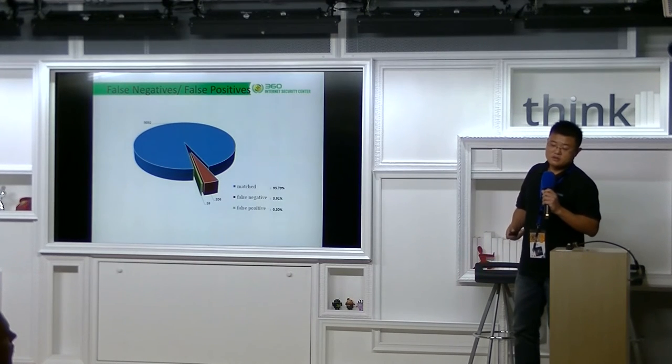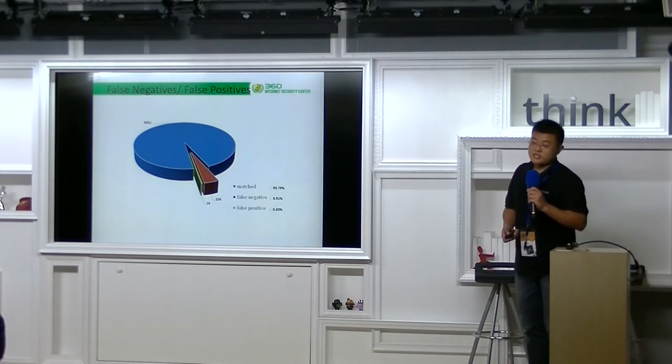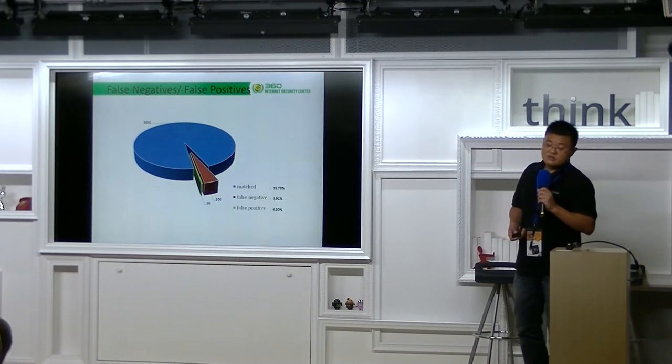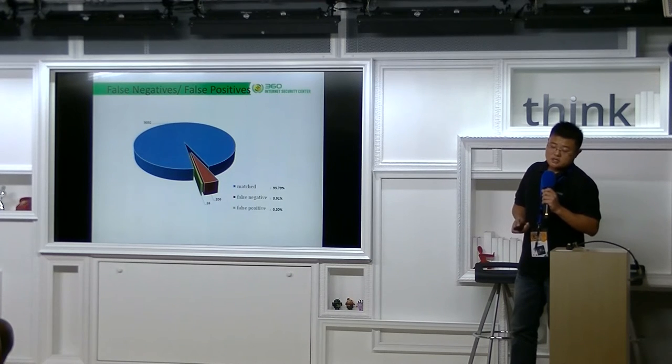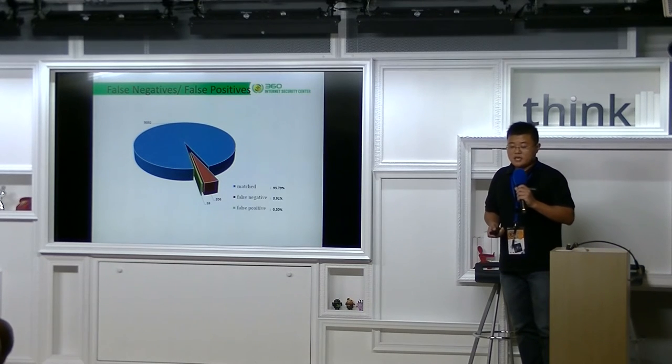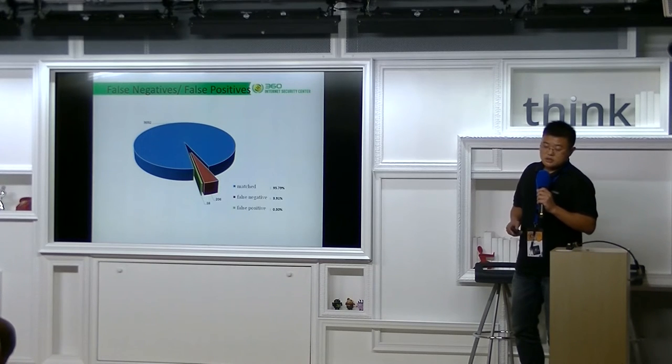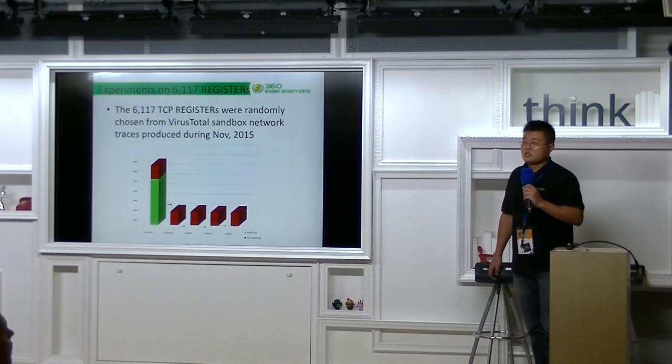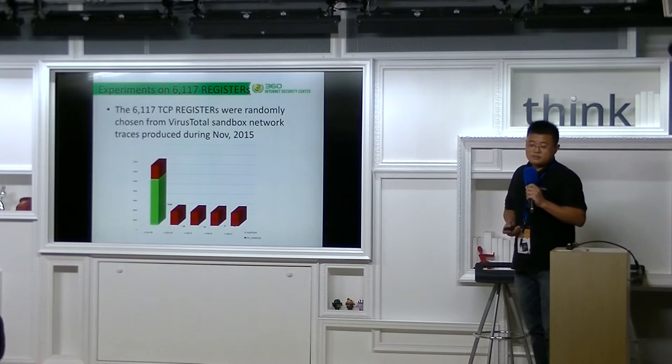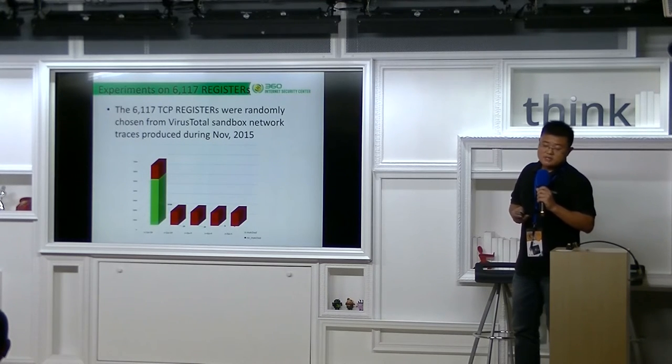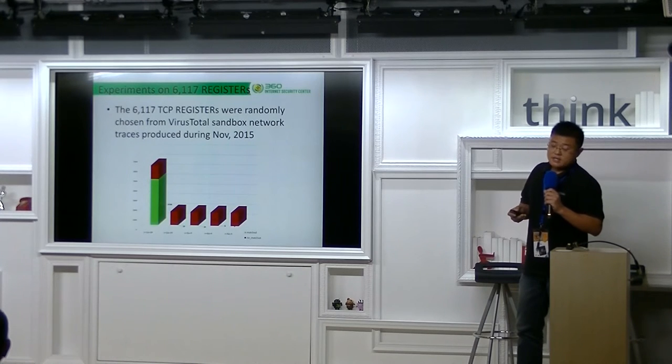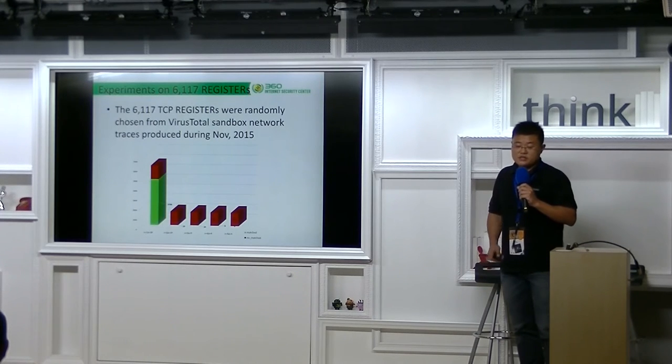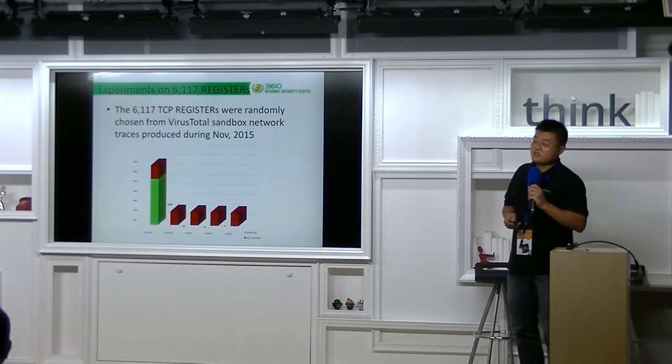False positive, false negative. We test our system with about 5,000 family known registers. The false negative is 3.91%, and the false positive is 0.3%. We also do some tests to see how many runs are needed. Our test shows that when classifying less than 10,000 registers, four rounds is enough. And as you can see, most of the registers are successfully classified in the first round.